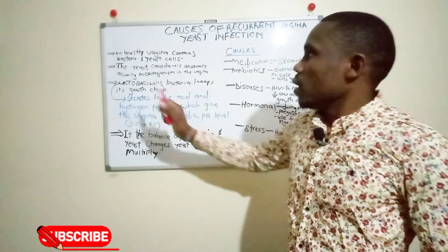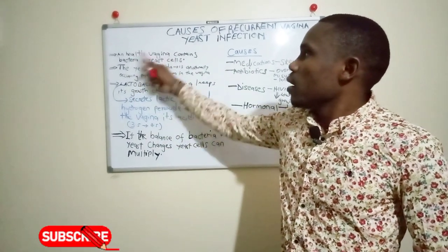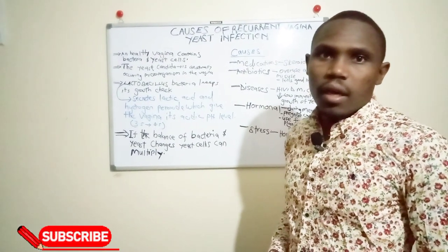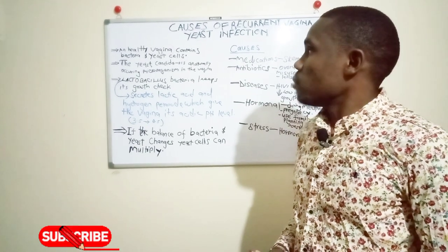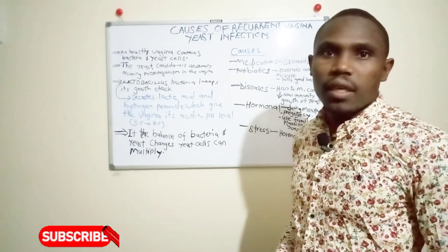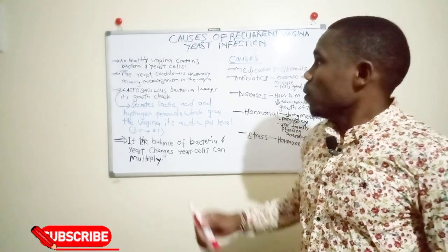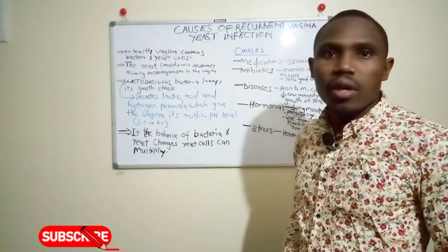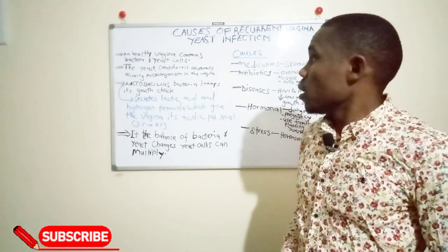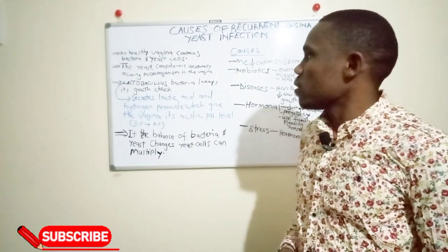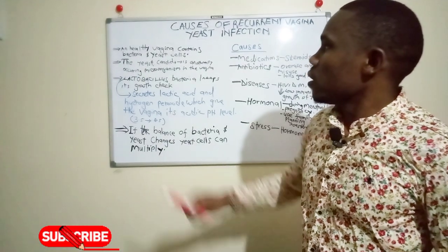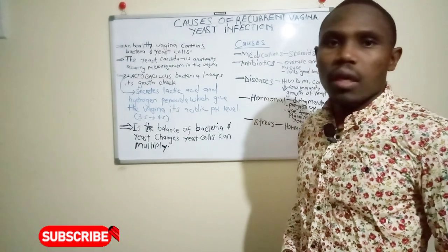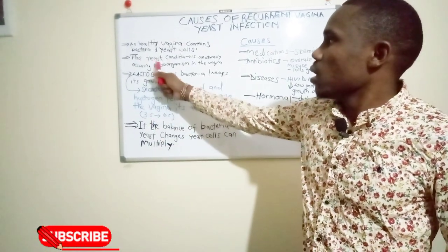We need to understand that the healthy vagina contains bacteria and yeast cells — these are the normal bacteria and normal yeast cells in the vagina. These yeast cells are a naturally occurring microorganism; they are normal flora in the vagina. The lactobacillus bacteria keeps this yeast in check.